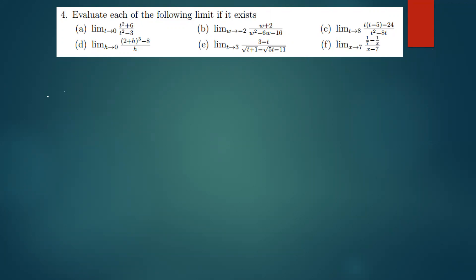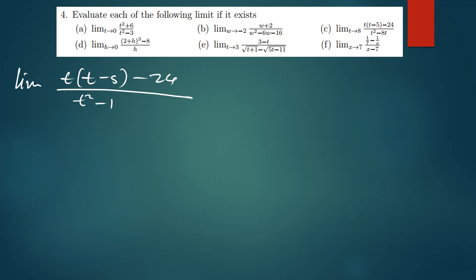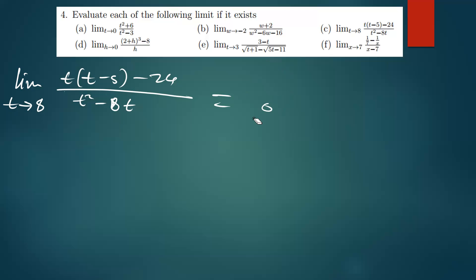For part C, the most important thing is to simplify the expression. The question is the limit of t(t minus 5) minus 24, everything divided by t squared minus 8t, as t approaches 8. If you try to put 8 where there is a t, the denominator becomes 8 squared minus 8 times 8, which is 64 minus 64, giving you 0. So down here you have 0, and any number divided by 0 is undefined or indeterminate.